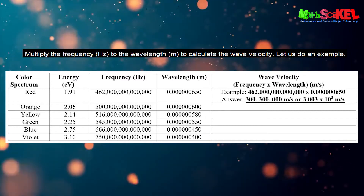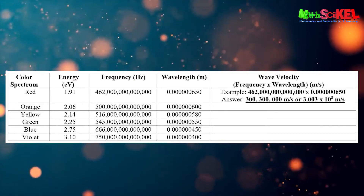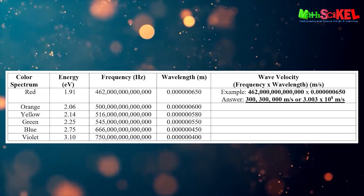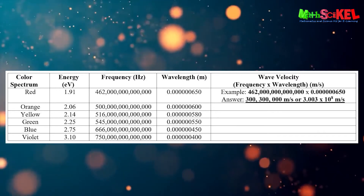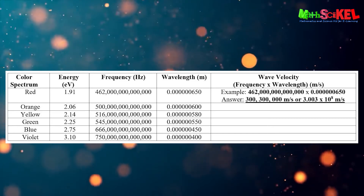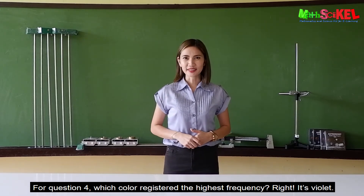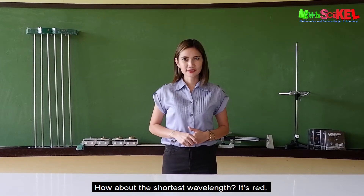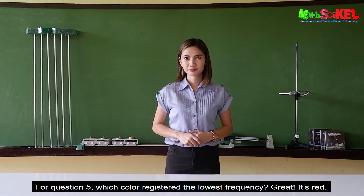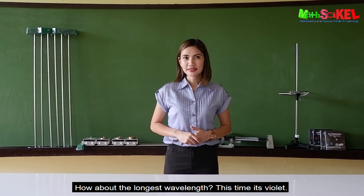Multiply the frequency in Hertz by the wavelength in meters to calculate the wave velocity. For example, multiply the frequency of red light by its wavelength in meters, which gives the product as wave velocity. Do the same for orange, yellow, green, blue, and violet. For question number 4: Which color has the highest frequency? It is violet. How about the shortest wavelength? It is red. For question number 5: Which color has the lowest frequency? It is red. How about the longest wavelength? It is violet.